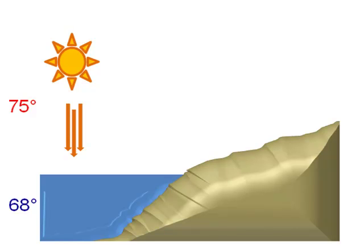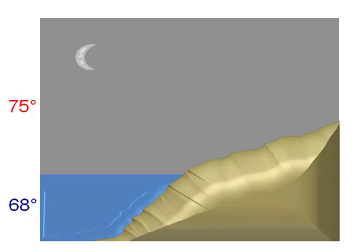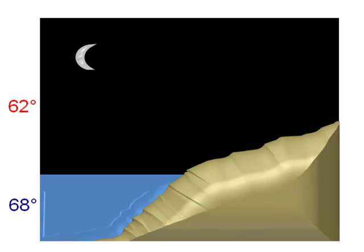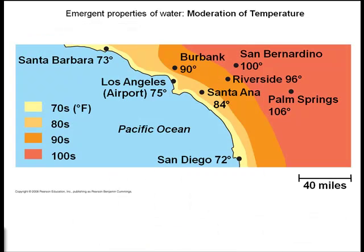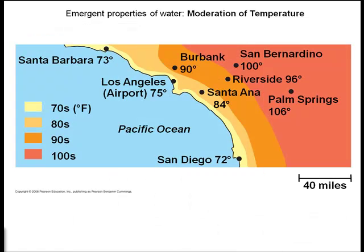The reverse happens at night. When the temperature drops, the water is warmer than the air and will give off energy or heat into the air as the water will begin to cool down and the air around it will begin to heat up. Now this happens relatively instantaneously and so you don't notice it very much when you're there, but this is how the coastal areas in California stay moderate throughout the seasons.